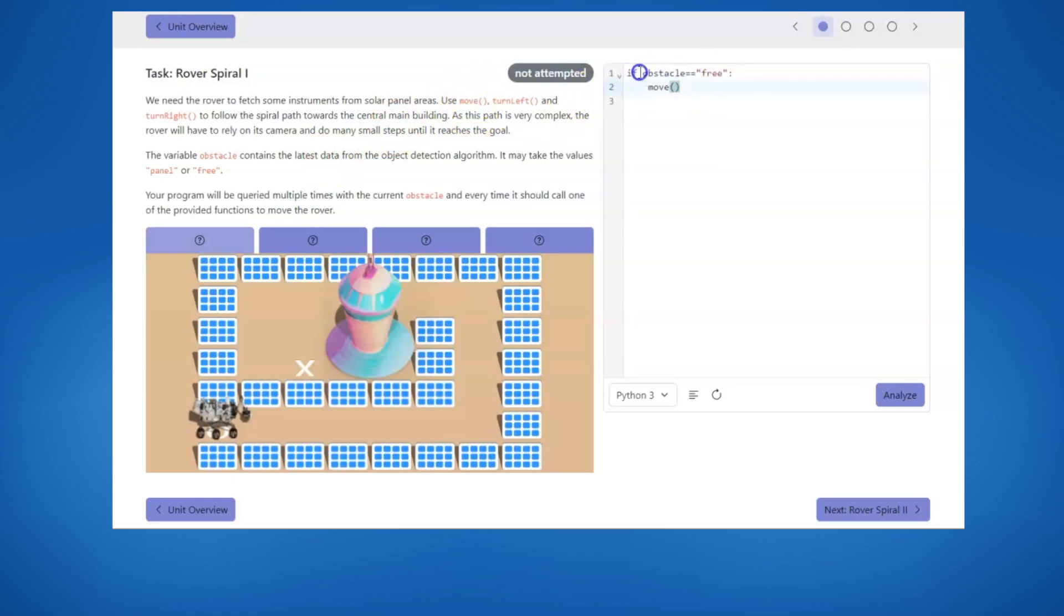If the path is free, then the robot can continue to move forward using the move function. If there is a panel, you must decide which way to turn. As you can see in this maze, all of the turns are to the left, so the robot will always make a left turn when we find a panel. You will use the turn left function for that.